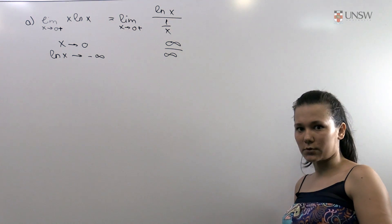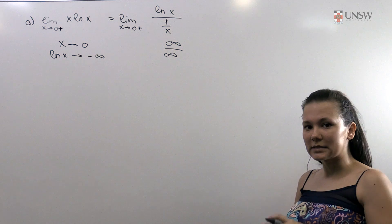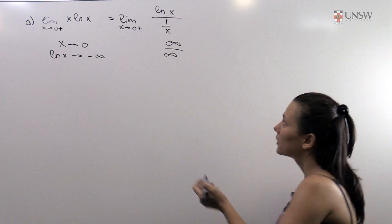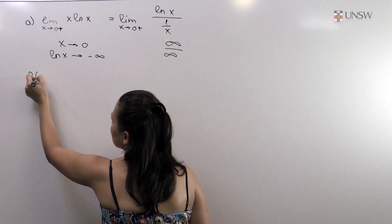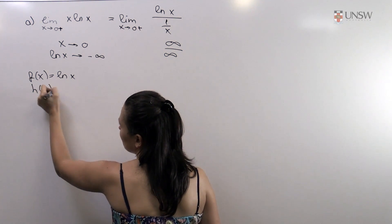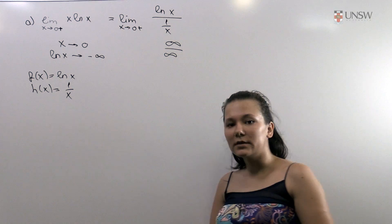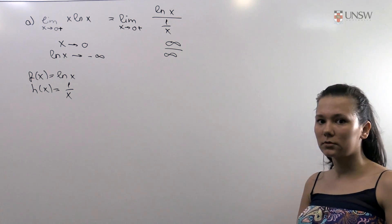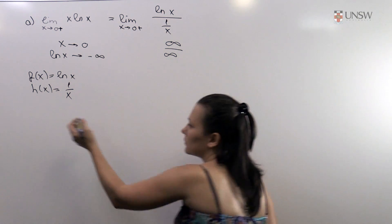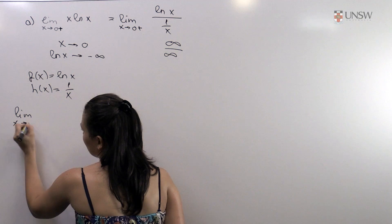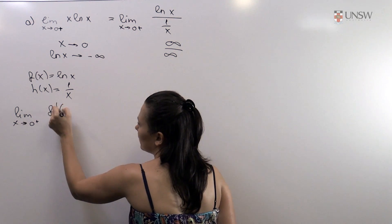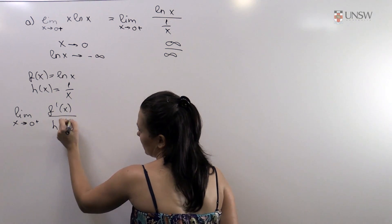We do know how to work with these limits. For this example we will explicitly use L'Hôpital's rule. We set f equal to ln(x) and h equal to 1/x. These functions are continuously differentiable when x is not equal to zero. So we can take the right-hand limit as x goes to zero from the right of f'(x) over h'(x).